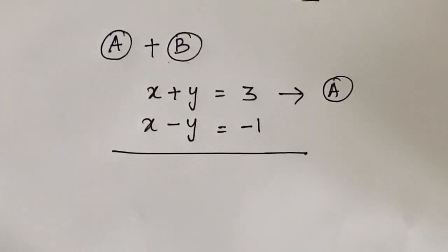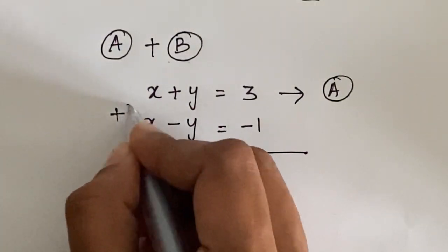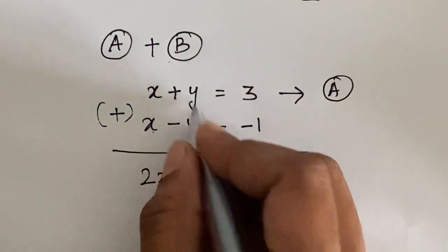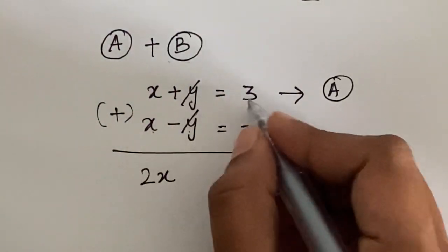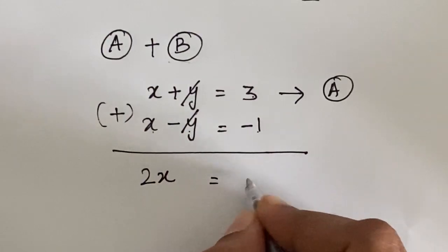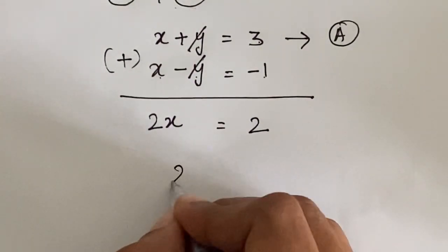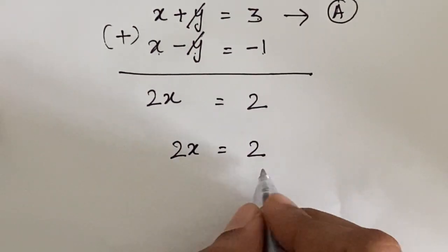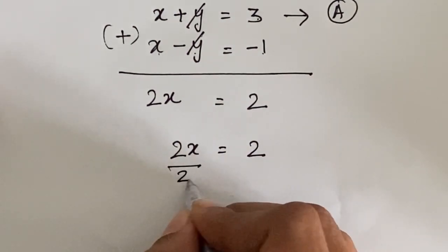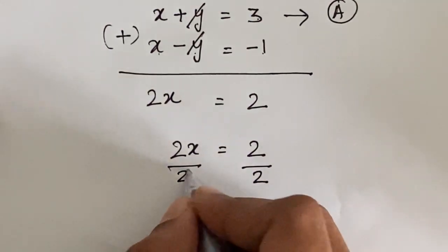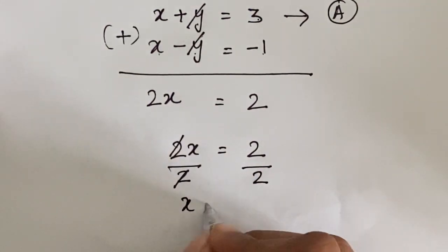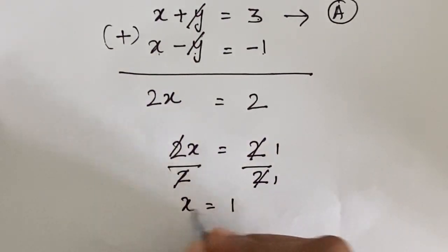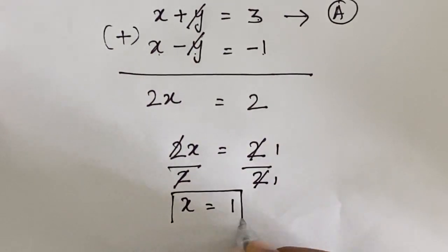We are going to add equation A and equation B. Adding gives 2x, and y and minus y cancel, so 2x equals 2. Dividing both sides by 2, we get x equals 1.